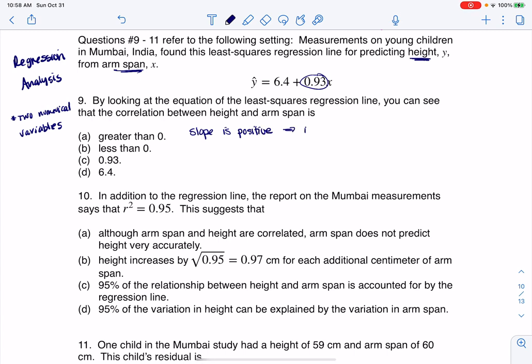So that implies there's an increasing relationship, or we might call it a positive relationship, meaning as arm span increases, as your arm span gets larger, then your height tends to get larger. And if you have that kind of positive increasing relationship, then you're going to have a positive correlation coefficient, a positive R value. So the sign of the slope and the sign of the R value, they're in tandem, they always match.